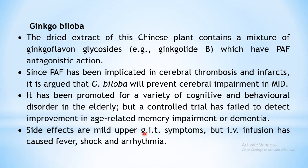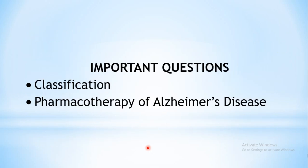Ginkgo biloba produces mild upper GI symptoms, but IV infusion may result in fever, shock, and even arrhythmias. This finishes the chapter. The important exam questions relating to this chapter are: classification of Alzheimer's treatment, and pharmacotherapy of Alzheimer's disease — where you need to discuss all the drugs, first explaining Alzheimer's disease briefly, then giving the classification, and discussing each class and how it is helpful in this condition.